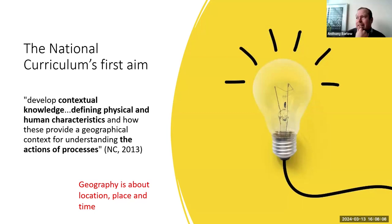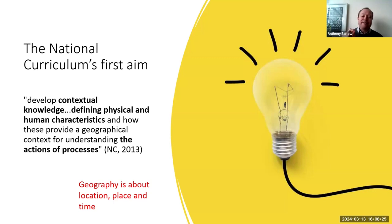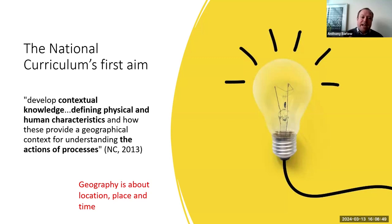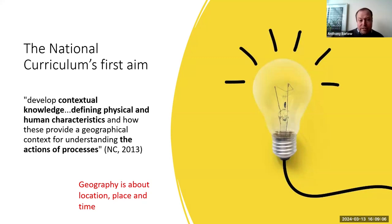On to place knowledge. Thinking about Digimap for Schools and place knowledge, it's worth considering the English National Curriculum's first aim: to develop contextual knowledge of the world and its defining physical and human characteristics, and how these provide a geographical context for understanding the actions of processes. So what specific context are you looking at in Digimap? What are those physical features, those landforms, those characteristics — the way buildings are arranged, where roads and railways are sited — that give context for discussions about processes?